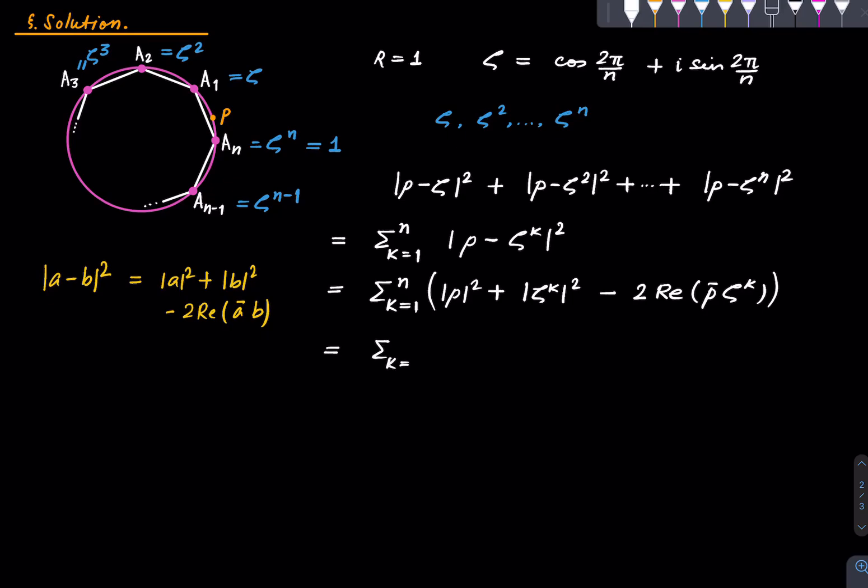Alright, but since P is on the unit circle, this is 1. Zeta is already a root of unity, so ζᴷ is also a root of unity and hence has magnitude 1. So we get this which is equal to 2n minus twice the summation of K from 1 to n of the real part of P̅ζᴷ. So we just pushed the summation inside, this 2 becomes 2n. So this is what we need to deal with.